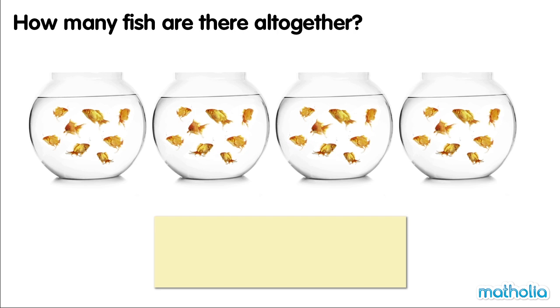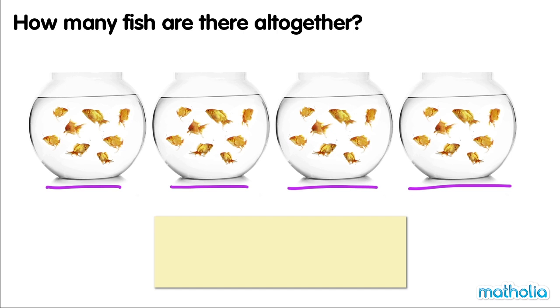How many fish are there all together? There are one, two, three, four groups of fish. In each group, there are eight fish.